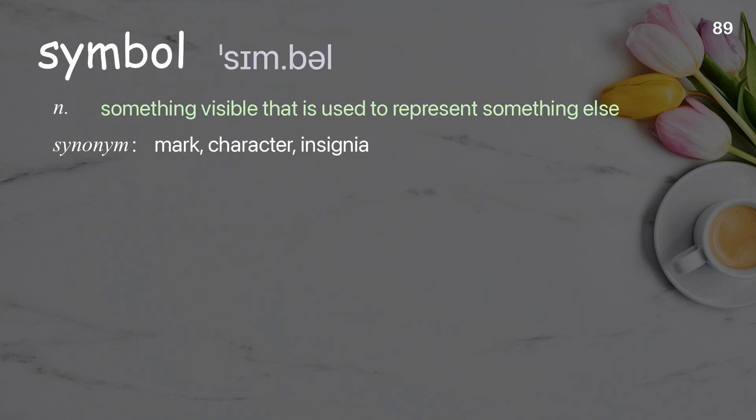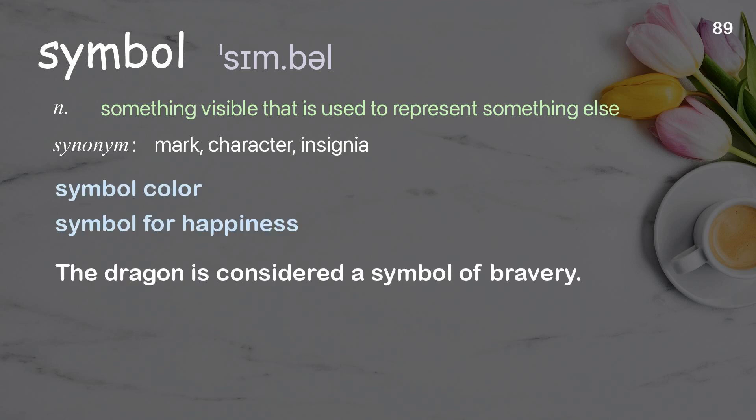Symbol: something visible that is used to represent something else. Examples: symbol color, symbol for happiness. The dragon is considered a symbol of bravery.